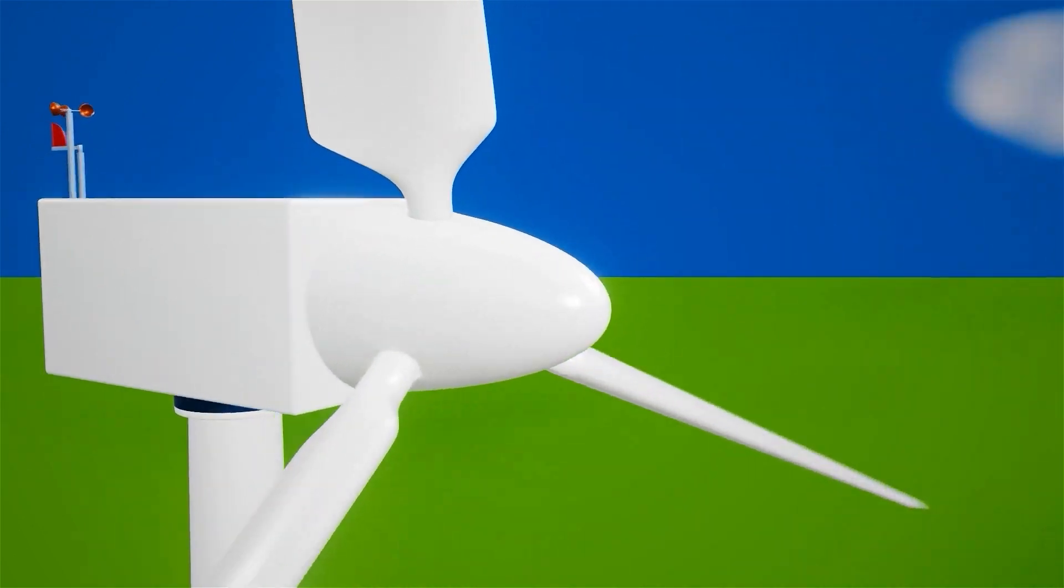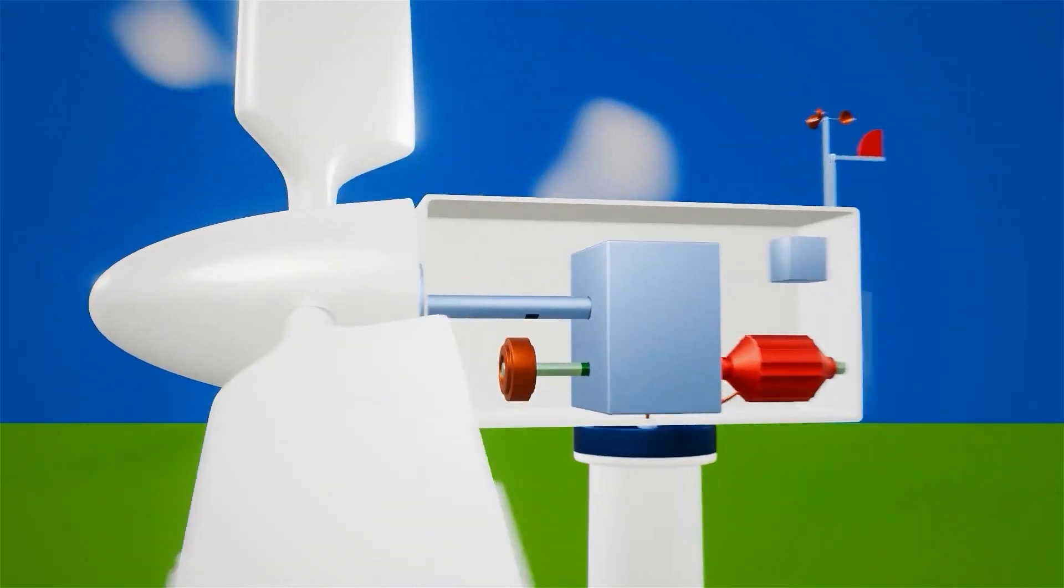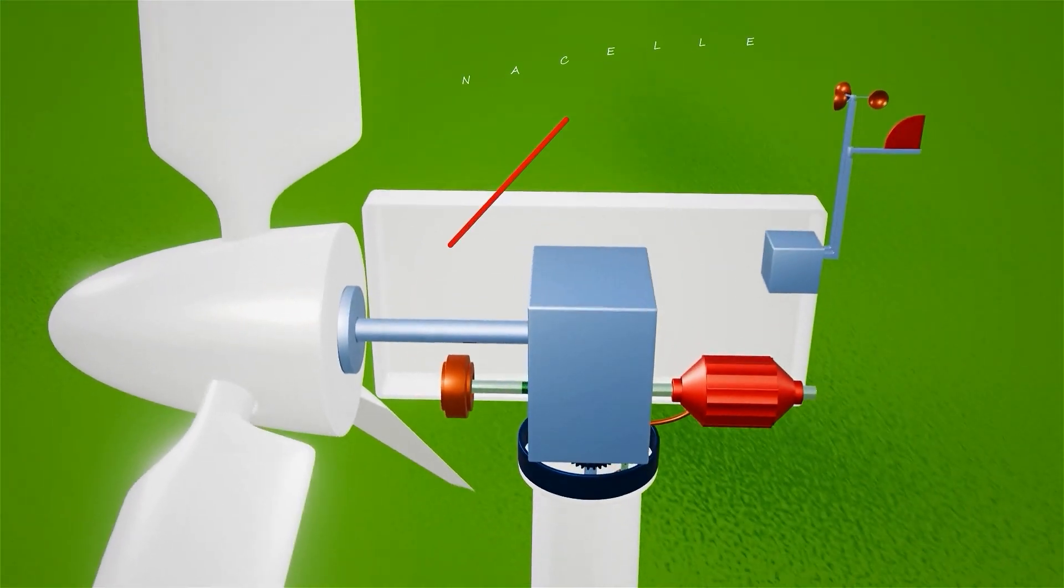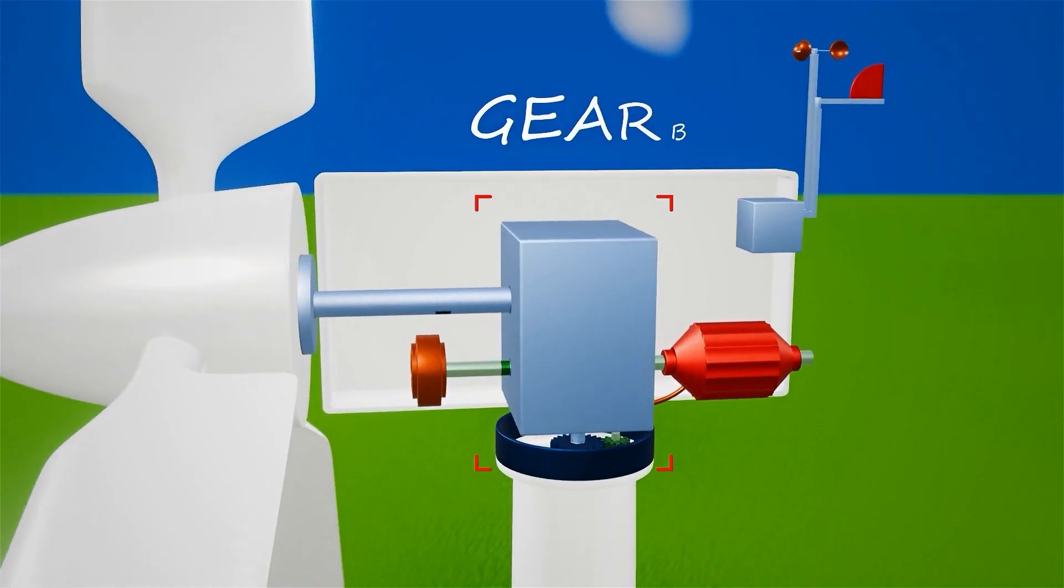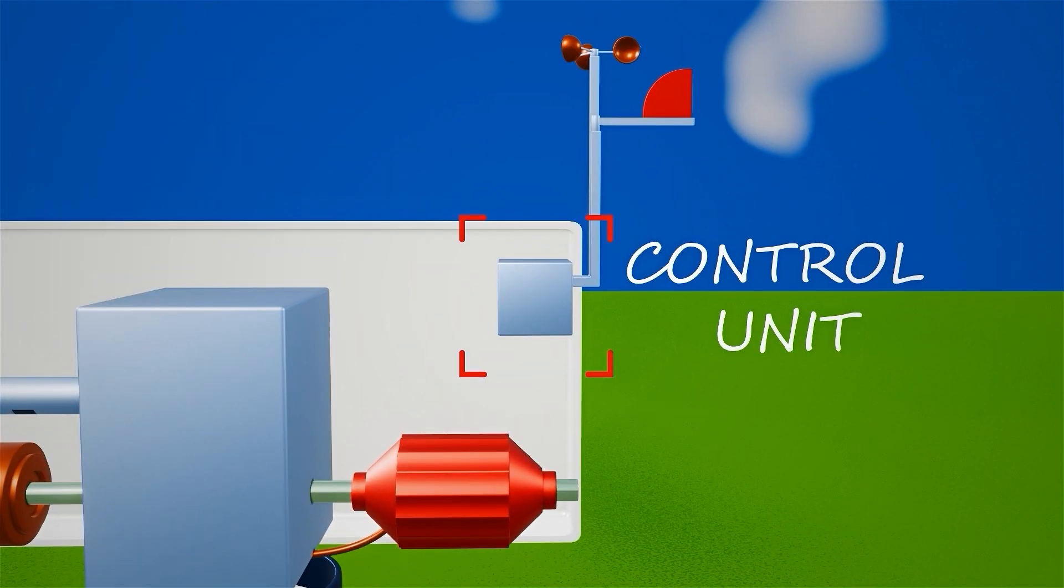Turbine blades are attached to a rotor that spins together with the blades. The rotational motion is transferred to a low-speed shaft connected to the rotor. Behind the rotor is a casing called the nacelle, which houses the gearbox, generator, and control systems.